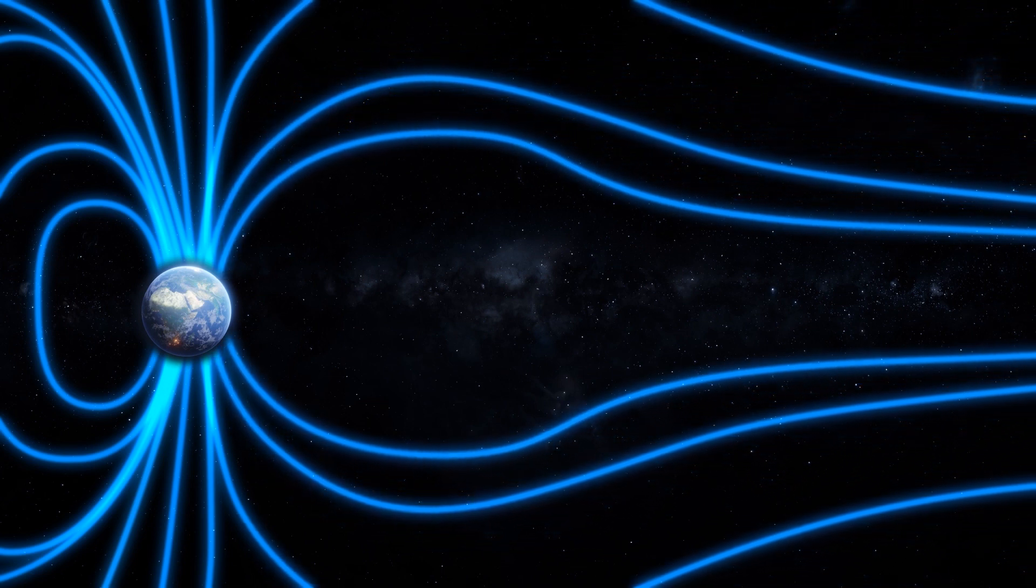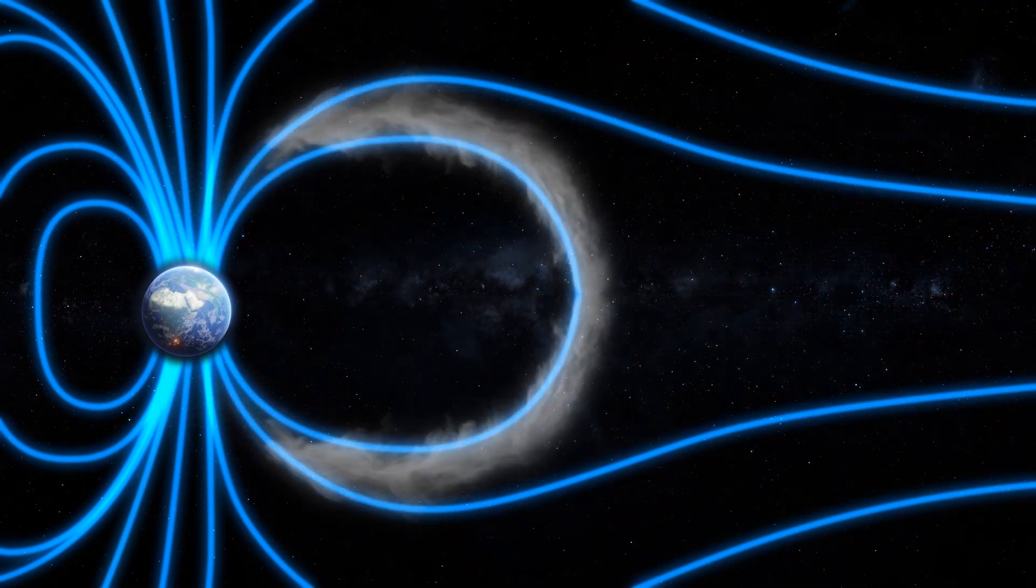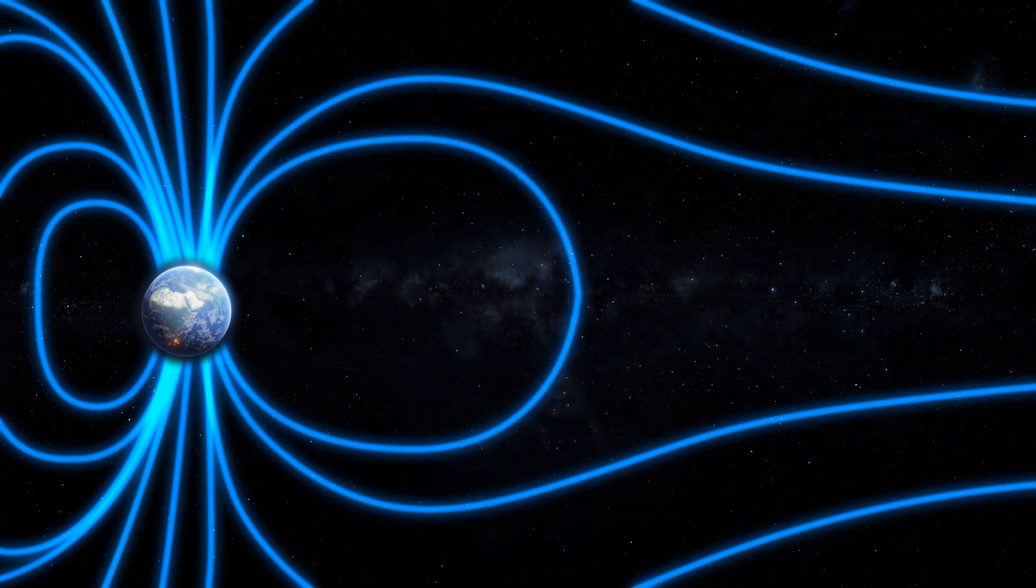These fluctuations occur near Earth's surface. Bursty bulk flows are bursts of ions that travel at a whopping 150 km per second.